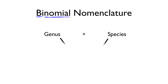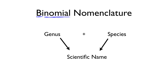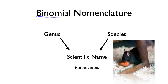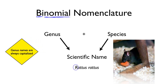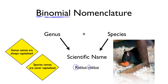These two words combine to form what we call the scientific name. Sometimes the genus name and the species name are the same word, as in the case of the black rat. Genus names are always capitalized and species names are never capitalized. And when you write them together, the genus and species name should be either underlined or in italics.